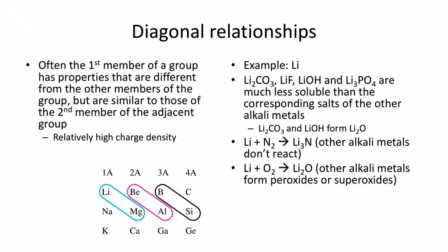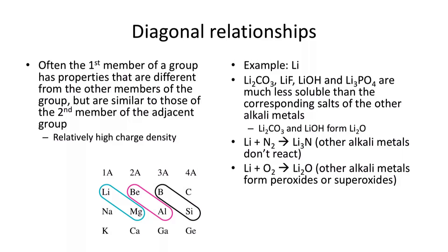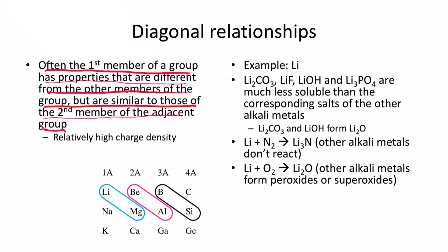I mentioned something called a diagonal relationship — what is that? We talked about periodic trends going across or down, but not diagonally. It turns out certain properties are shared diagonally that differ from vertical or horizontal trends. Often, the first member of a group has properties different from other group members, but similar to the second member of the adjacent group. For example, lithium is diagonal to magnesium, beryllium to aluminum, and boron to silicon. The reason is that these pairs tend to have similar charge densities.